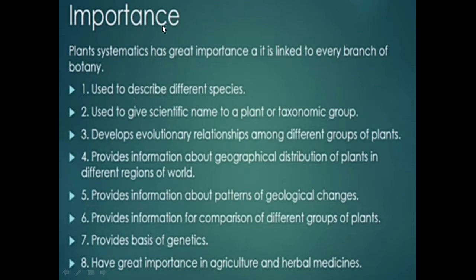Plant systematics has great importance as it is linked to every branch of botany. It is used to describe different species and to give scientific names to plants or taxonomic groups. It develops evolutionary relationships among different groups of plants. It helps provide information about the geographical distribution of plants in different regions of the world, and also provides information about patterns of geological changes.